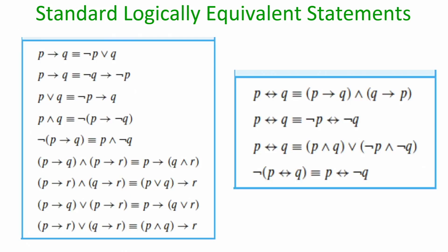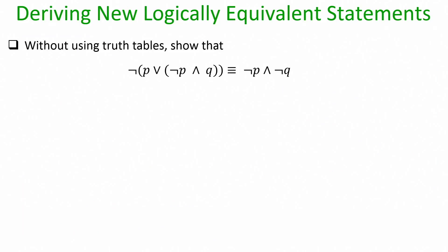There are various other standard logical equivalence statements — some without specific names — which can be used during simplification. As an example, suppose we want to prove that a given LHS expression X and RHS expression Y are logically equivalent. Even though X and Y involve only two variables and a truth table with four rows is possible, we will demonstrate proving equivalence without a truth table, using logical identities.